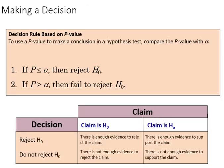So this is where we come to making a decision for our hypothesis test. The decision rule is based on a p-value, so we use a p-value to make a conclusion, and we compare p to the alpha. If it's less than or equal to alpha, we reject H0, or if it's more than alpha, we fail to reject H0.